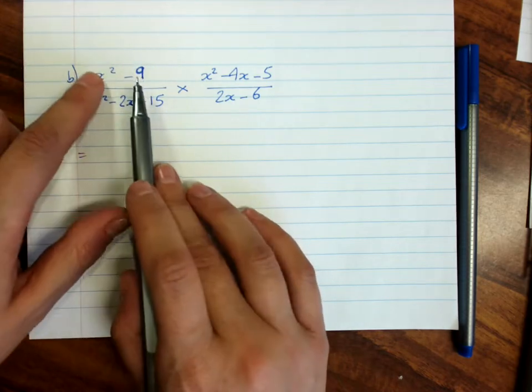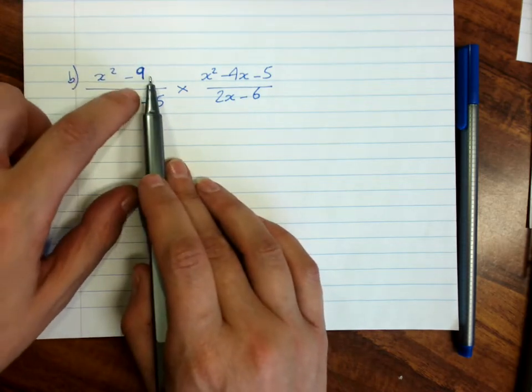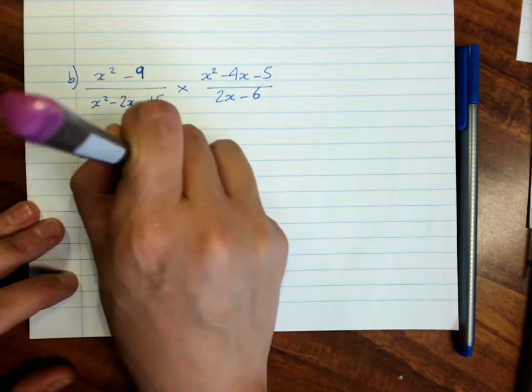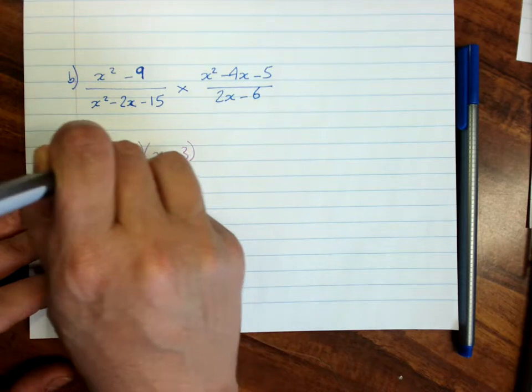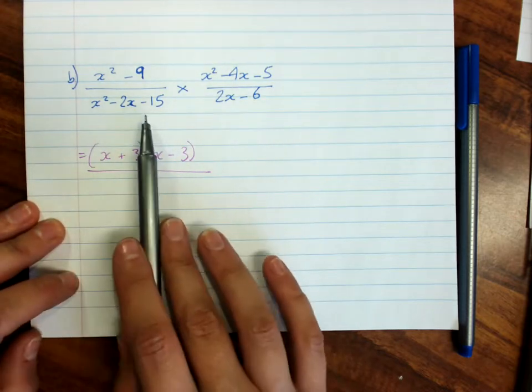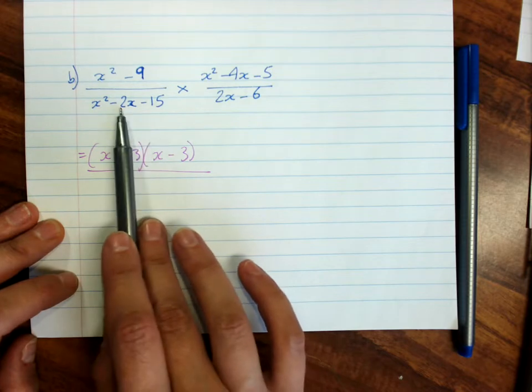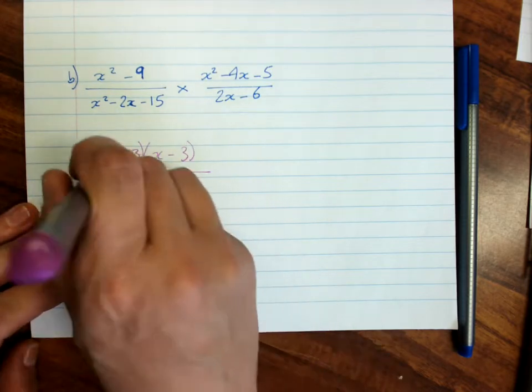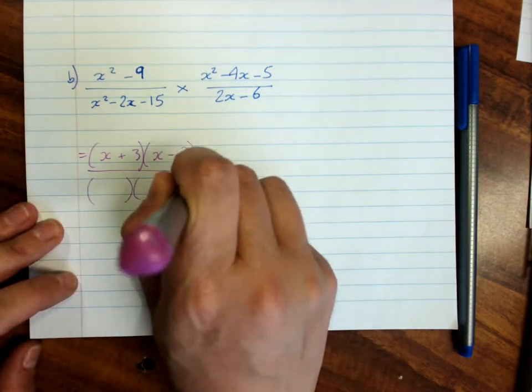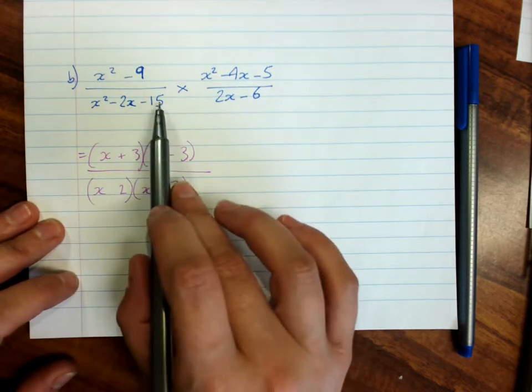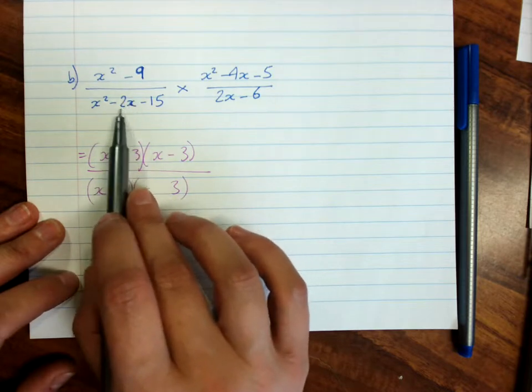x squared minus 9. Squares and a difference. This is a difference of perfect squares. x plus 3, x minus 3. Choose some factors here. Well we've got 15 and we need to get to 2. So that's going to be 2 and 3. This is negative. So one of them must be negative. This middle term is negative.